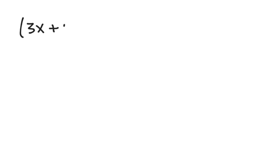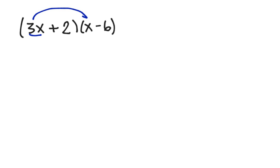For example, let's say I have 3x plus 2, and we're going to multiply that times x minus 6. We would take the first term, which is the 3x, and multiply it times the first term in the second parentheses, x, which gives me 3x squared.